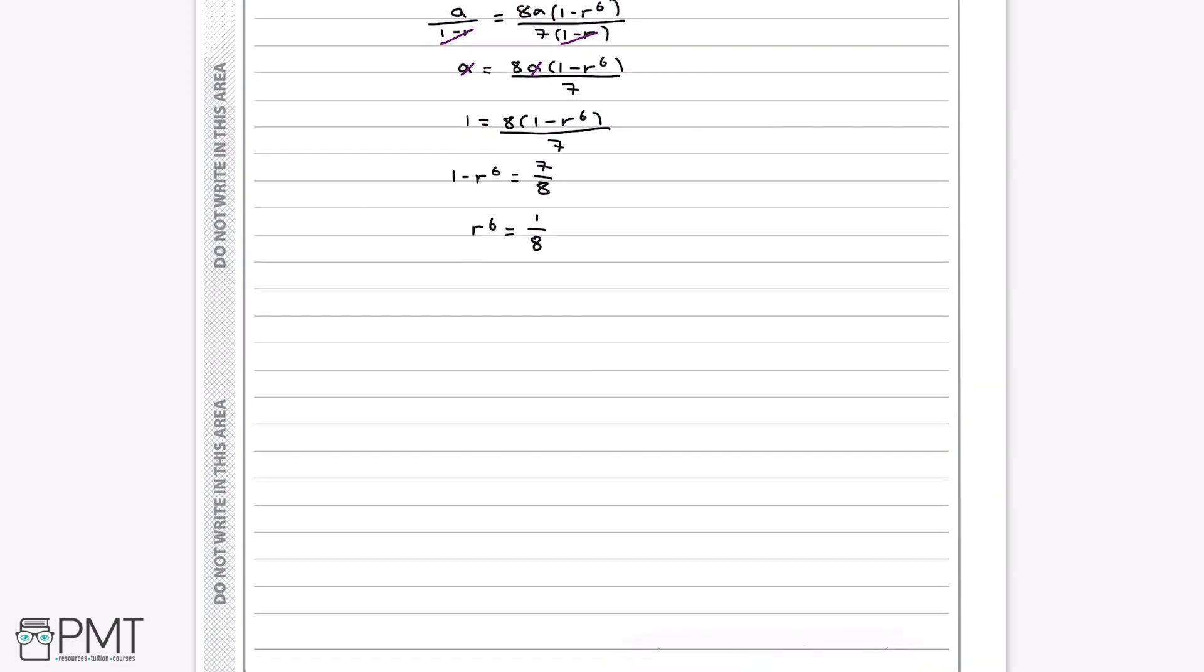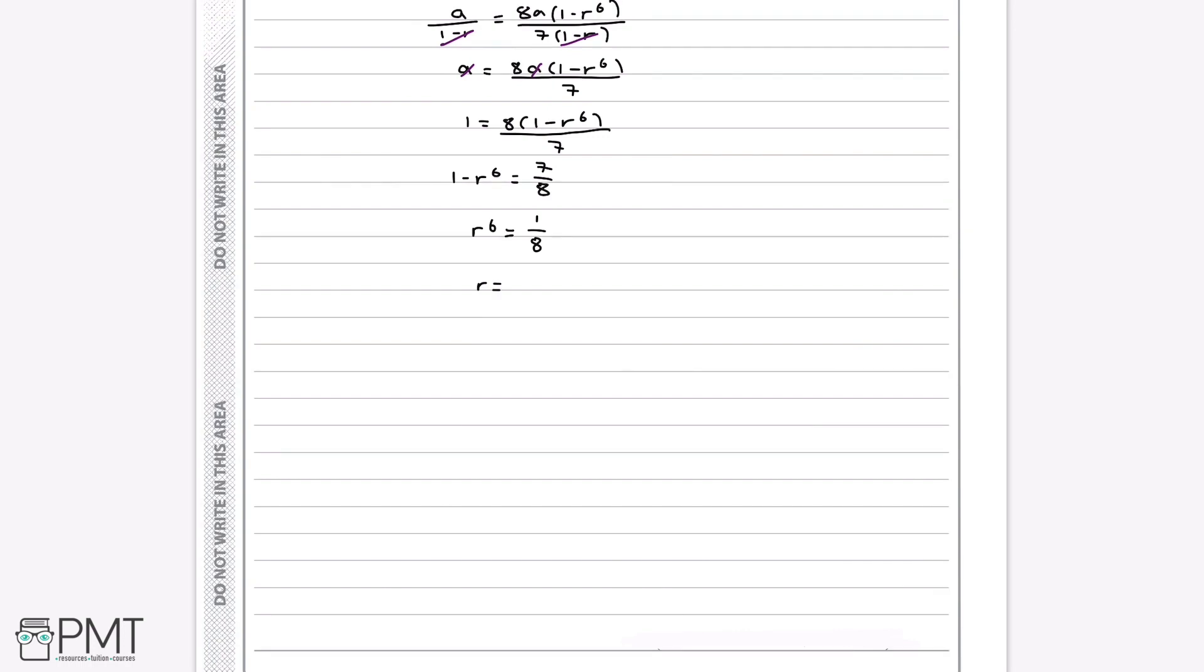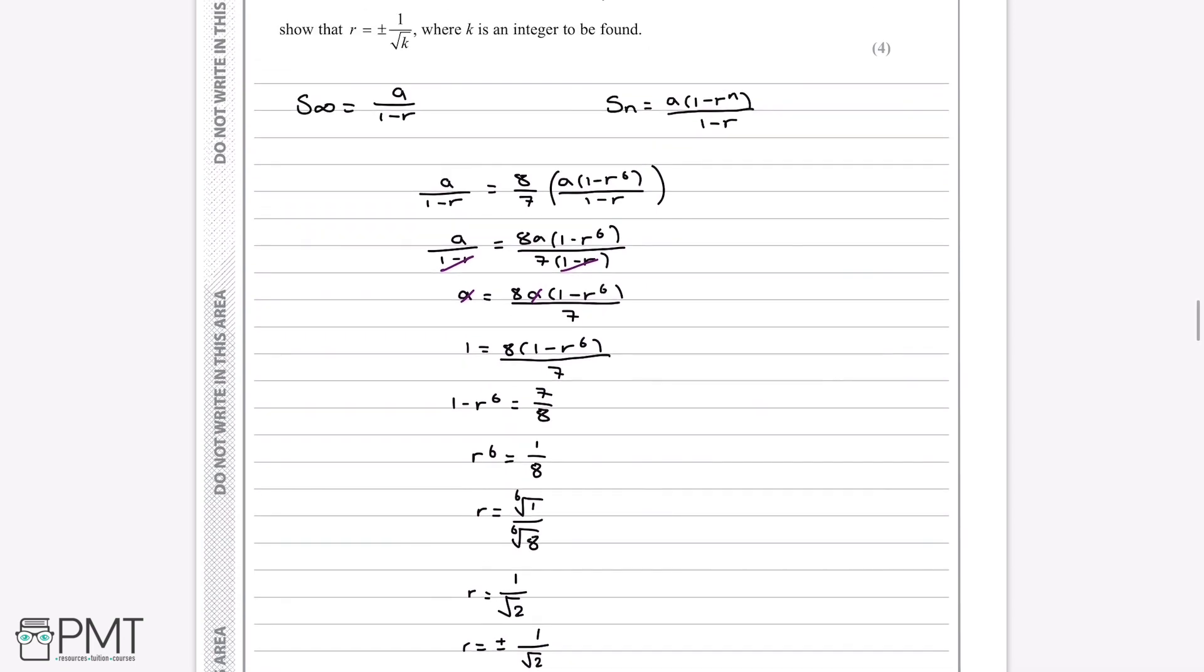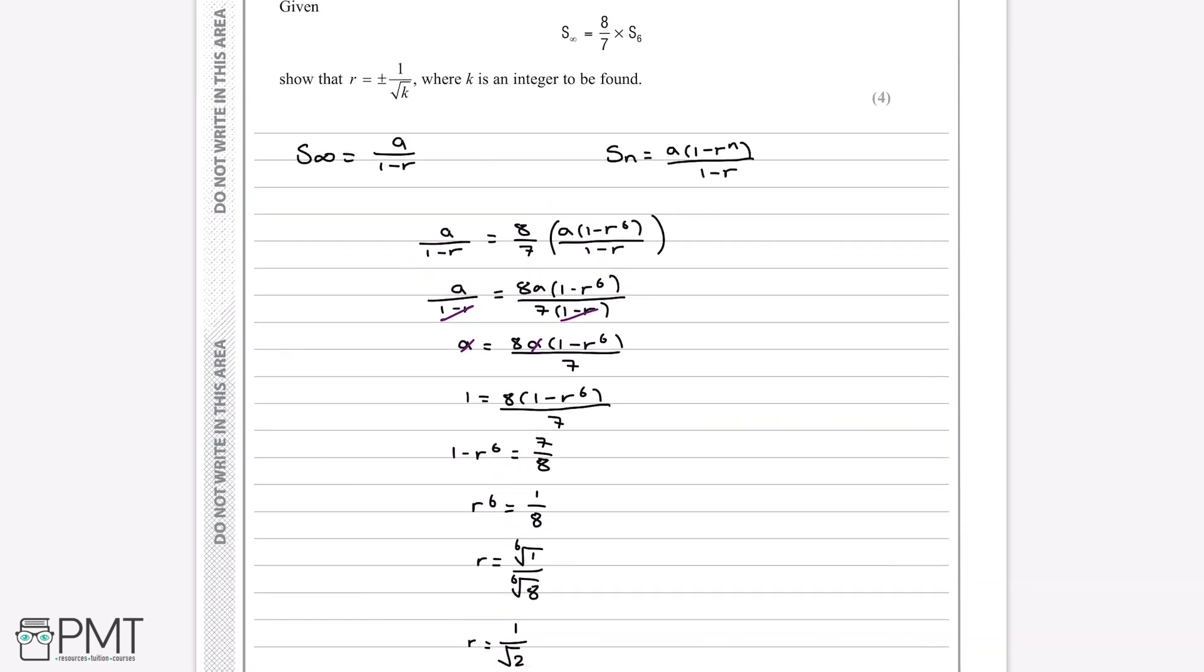We can solve this further by taking the sixth root of everything. The sixth root of 1 is just 1, but the sixth root of 8 can also be written as root 2. Therefore we can write, I should add a plus or minus in front of that, r = ±1/√2, which is just the form they've given in the question.